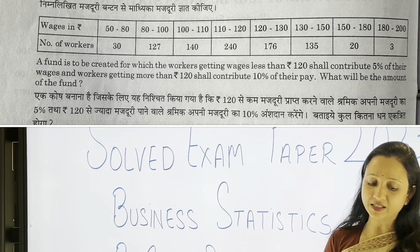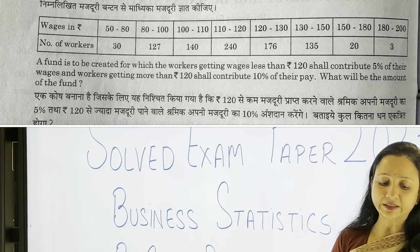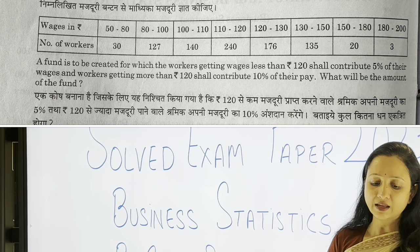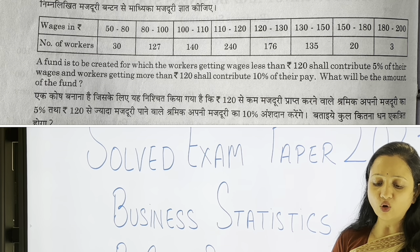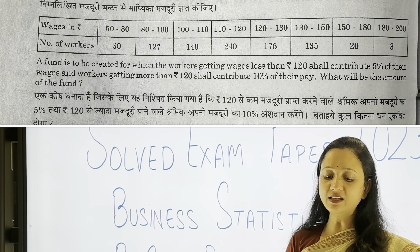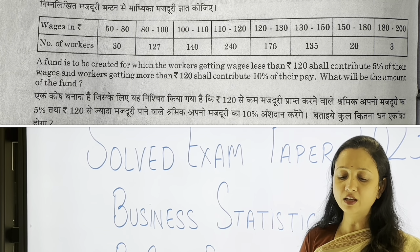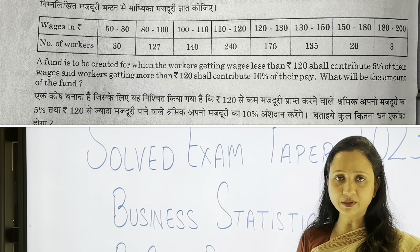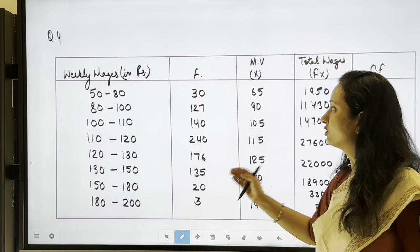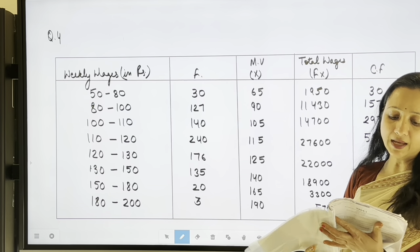Unit 2's second practical question: calculate the median wages from the following wages distribution. A fund is to be created: workers earning wages less than rupees 120 shall contribute 5% of their wages, and workers earning more than rupees 120 shall contribute 10%. We need to find the total amount of the fund. Wages and frequencies are given on a weekly basis.